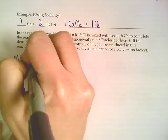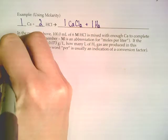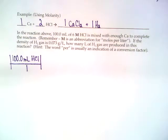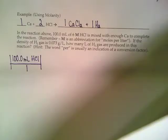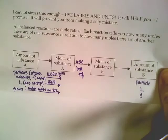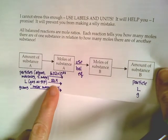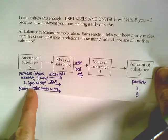100 milliliters of HCl. Now our flowchart says we have to get those 100 milliliters of HCl into moles. We're at milliliters, but we can't use the 22.4 conversion factor to get us into moles.